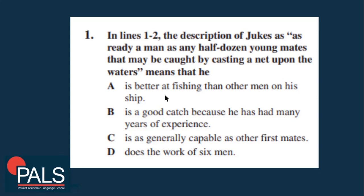Let's go to the first question. In lines 1–2, the description of Jukes as 'as ready a man as any half dozen young maids may be caught by casting a net upon the waters' means what? When we say Jukes is a ready man 'as any half dozen young maids,' the keyword is 'as any' — meaning equal. So it means that he is generally as capable as other first mates.